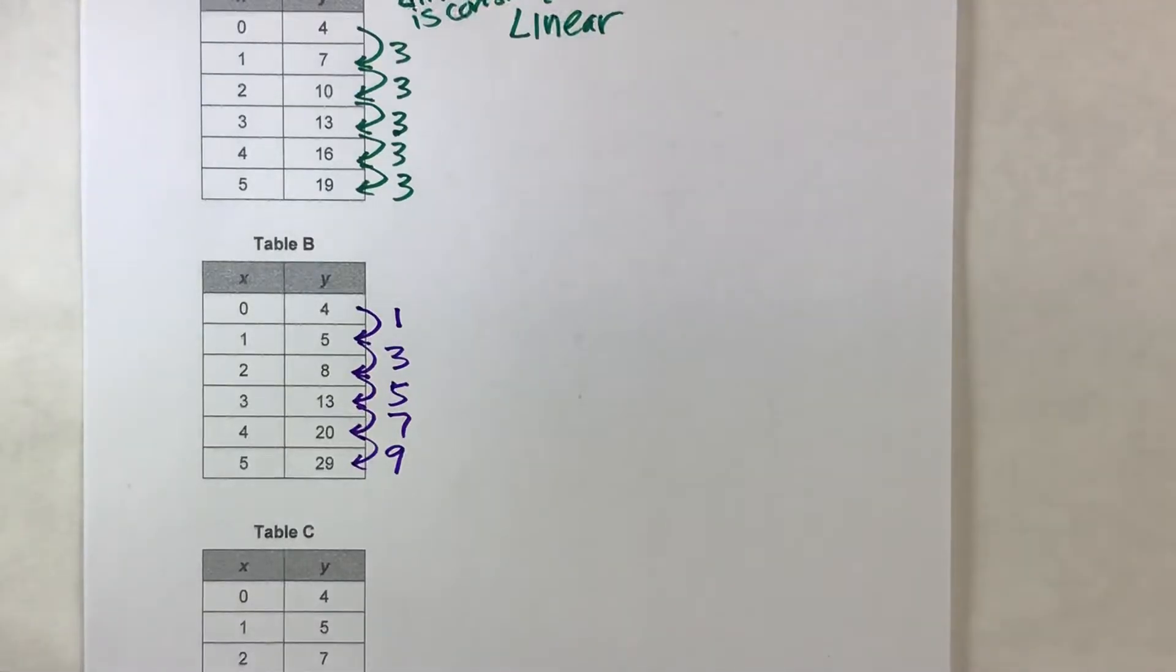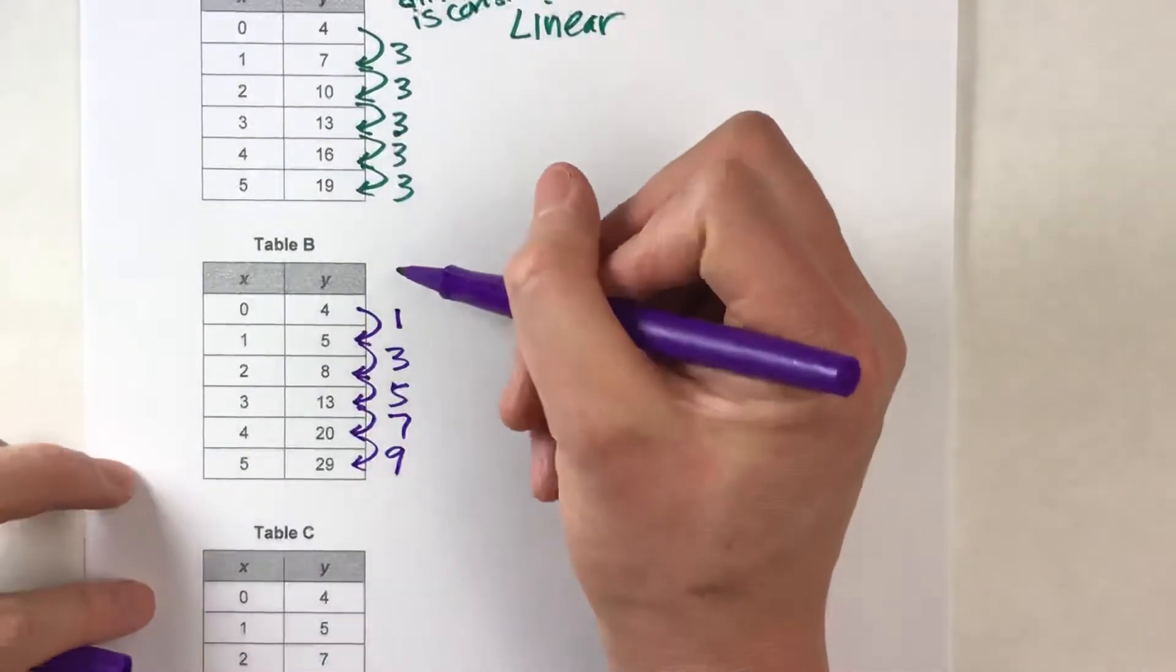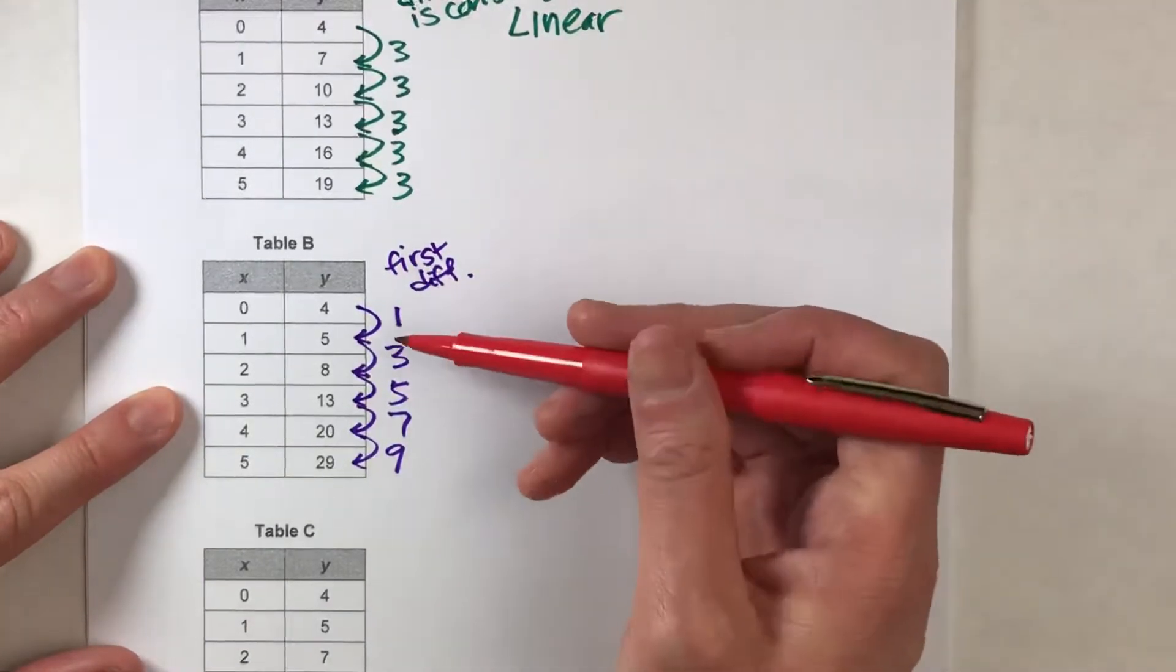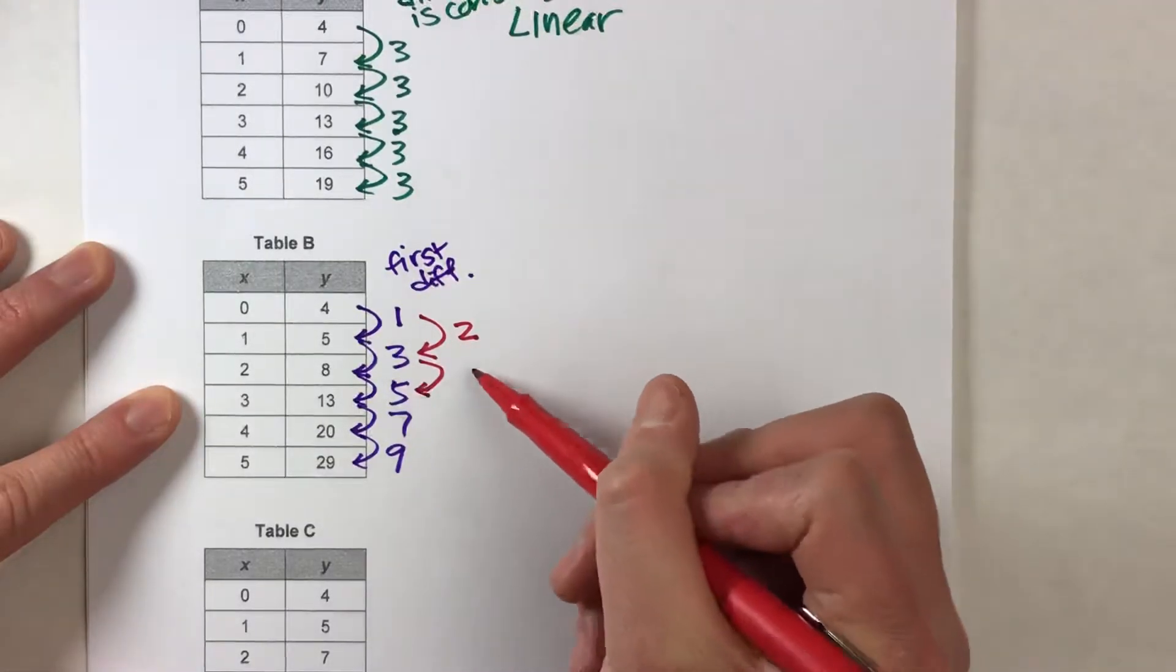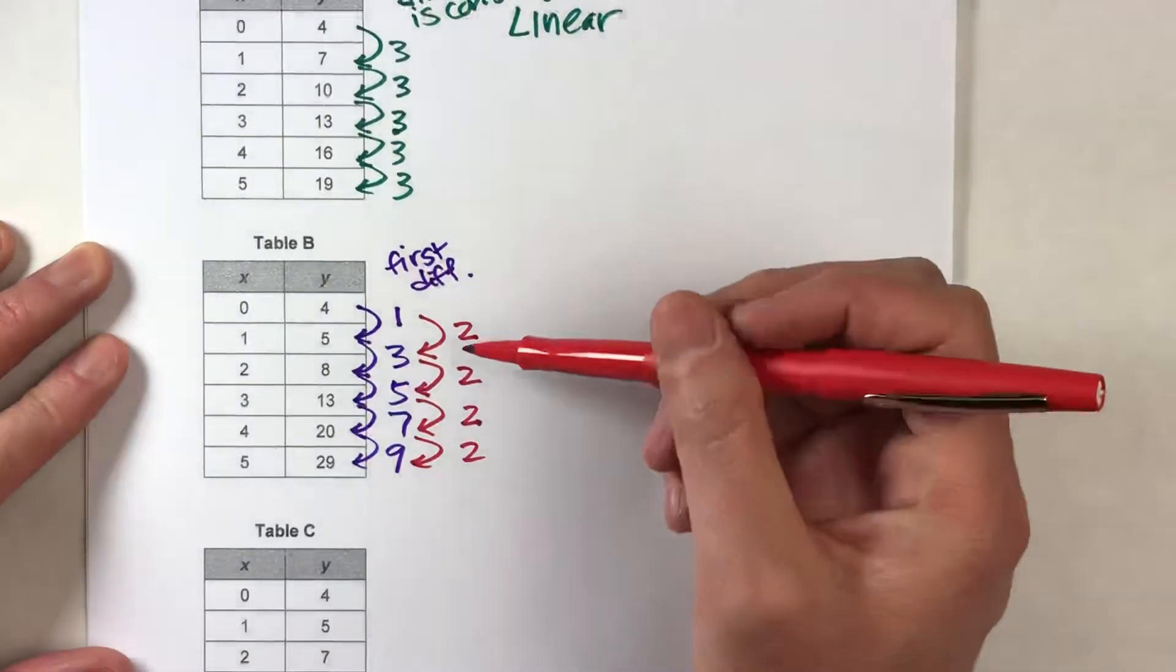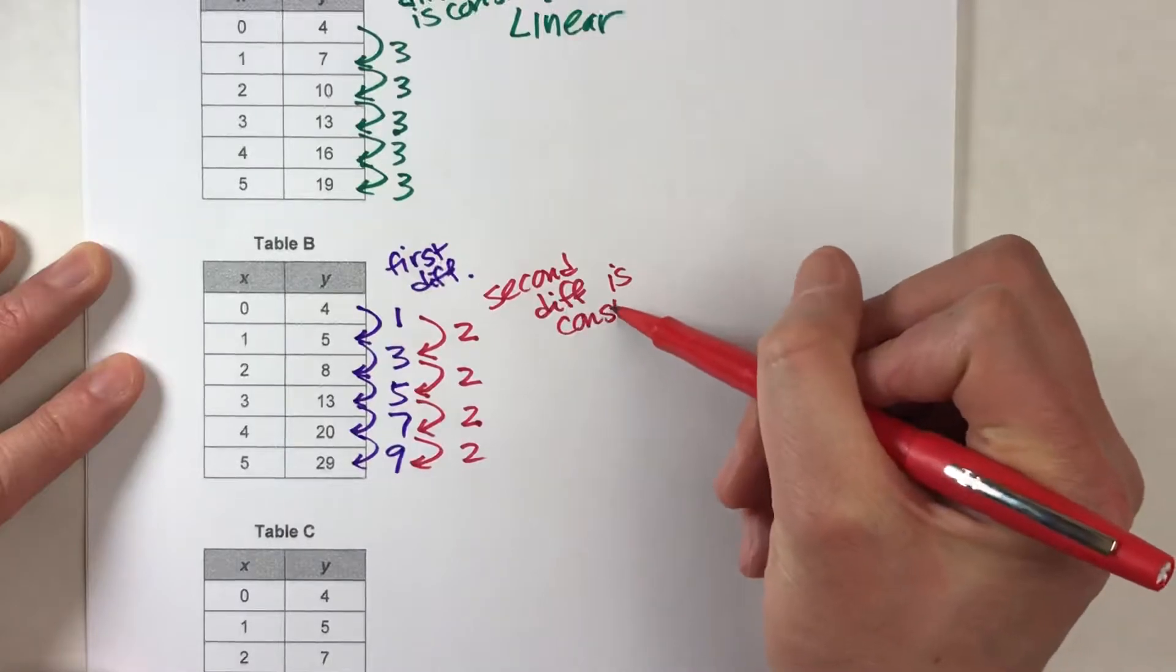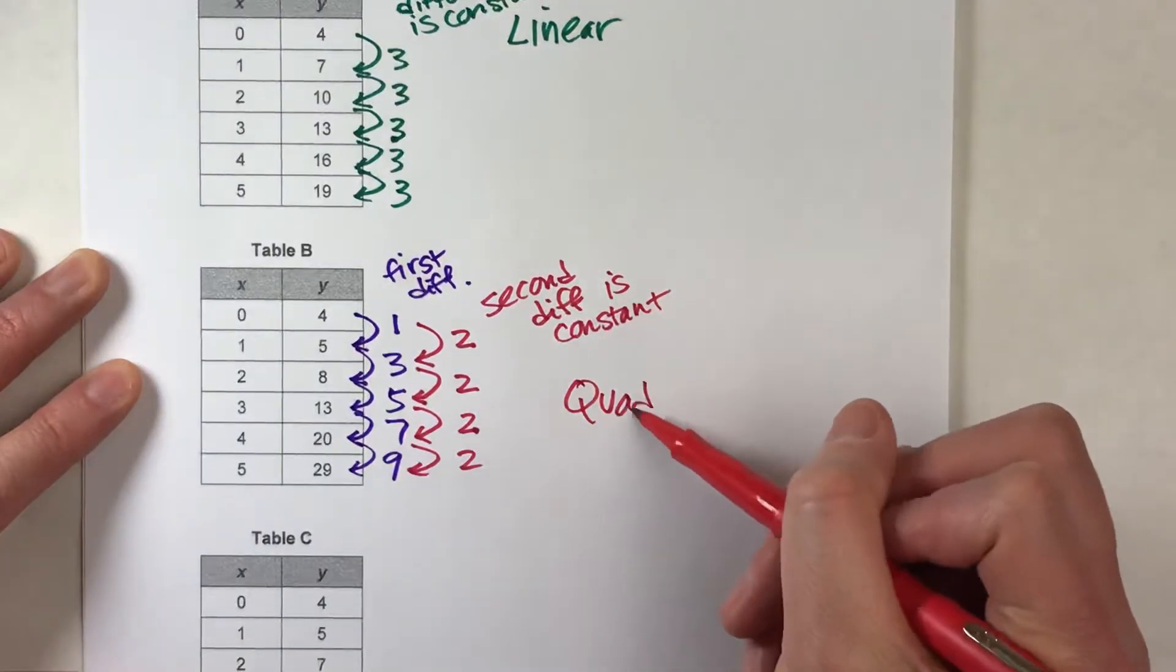Now what do we do? Well, now what we can do is figure out how much are these first differences changing. So remember, this is the first difference, and it's changing by a different amount each time. Now let's look at the second difference to see how much these are changing. From 1 to 3, it's going up by 2. From 3 to 5, it's going up by 2. From 5 to 7, it's going up by 2. And from 7 to 9, it's going up by 2. Notice, this second difference is adding the same amount each time. So the second difference is constant.